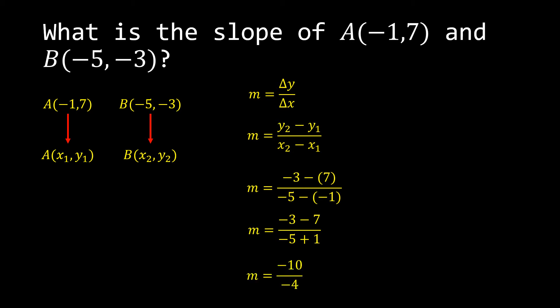Simplifying, we have negative 3 minus 7 all over negative 5 plus 1, which gives us negative 10 all over negative 4. So m is equal to negative 10 over negative 4, and simplifying that, the answer is 5 halves.